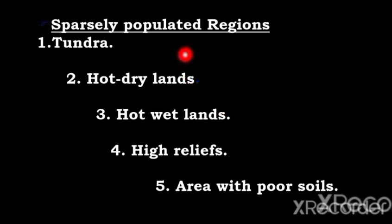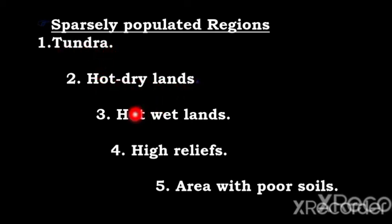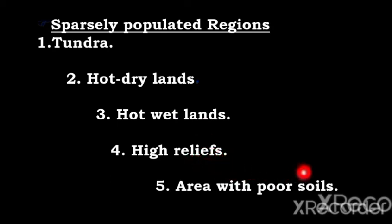Sparsely populated regions include the Tundra — the coldest region of the globe with the most harsh climate — hot dry lands such as deserts, hot wet lands with high rainfall, areas of high relief with the highest mountains, and areas of poor or infertile soil. These regions attract very few people.